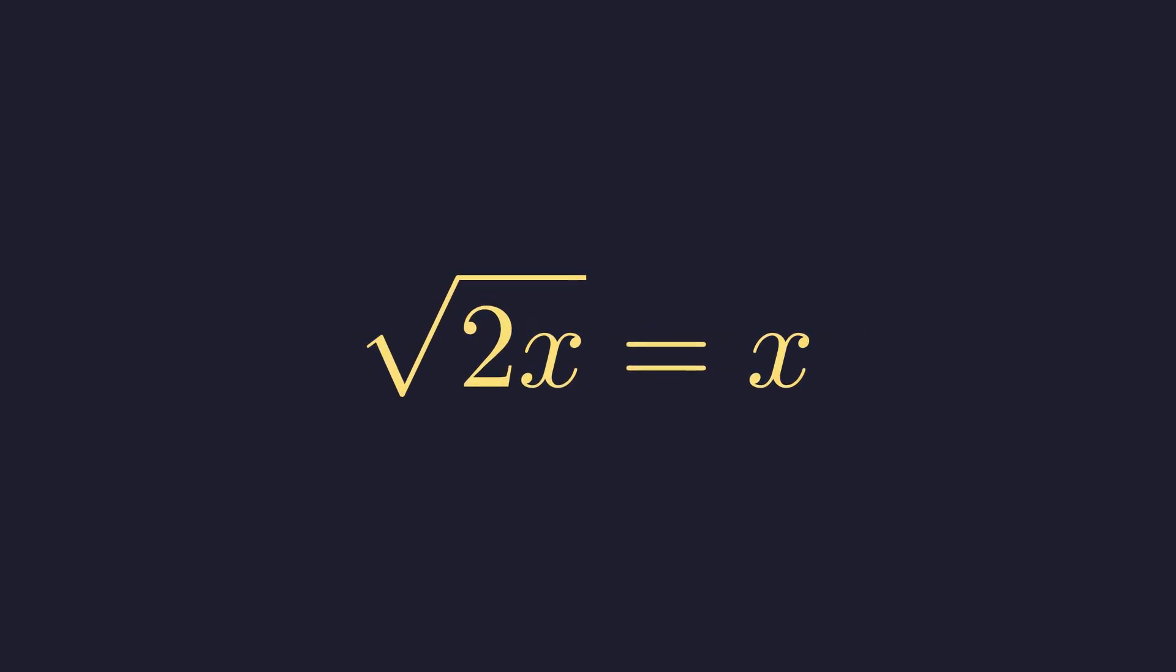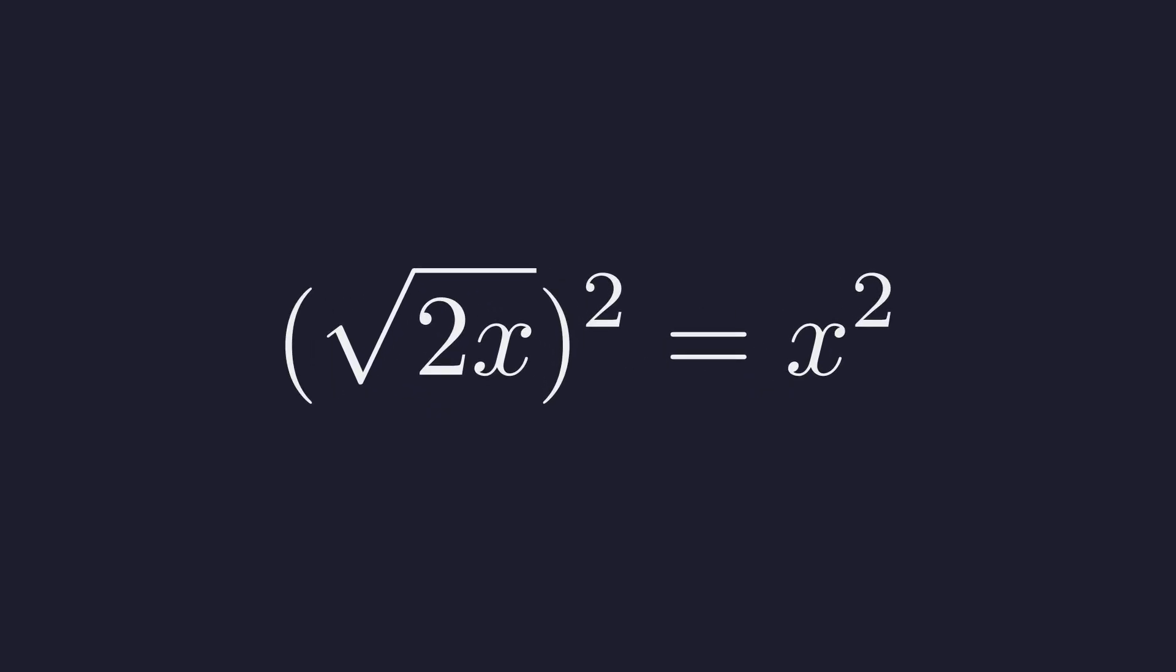To get rid of the square root, we square both sides. This gives us 2x equals x squared.